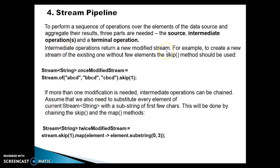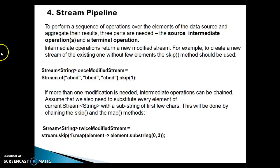An intermediate operation returns a new modified stream. Whenever you perform an intermediate operation, you get the modified stream itself. For example, to create a new stream from an existing one without a few elements, the skip method should be used. If you want to skip the first element, you can use skip(1) and you get a stream of strings again, but this modified stream will contain only the remaining elements.